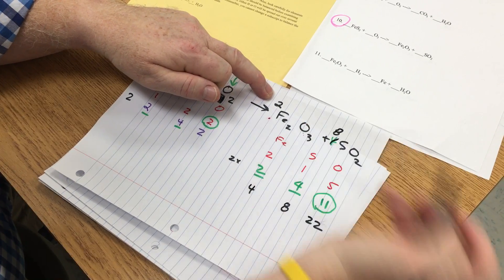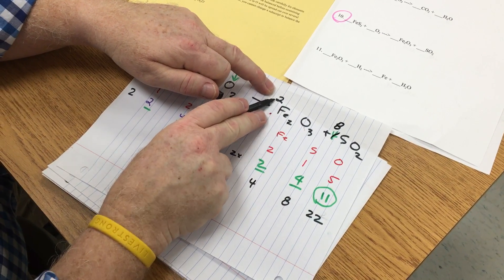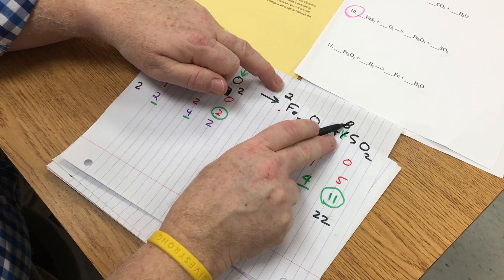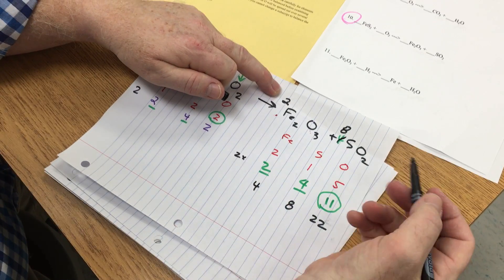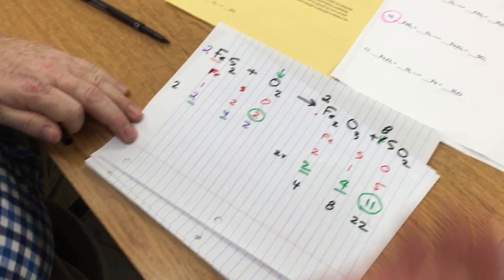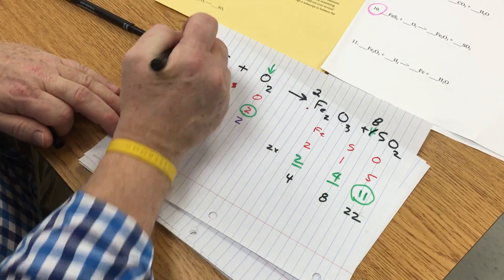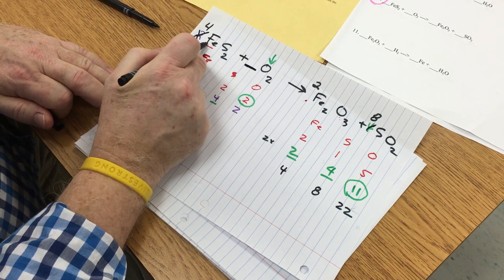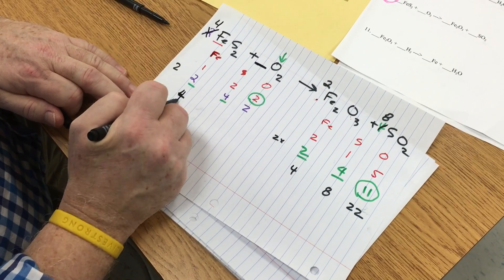So let's just count. Two times two is four, two times three is six, eight times two is sixteen, sixteen and six is twenty-two. And I have eight sulfurs. I've got to do the same thing on the other side. I change that two to a four, and now I've got four irons, eight sulfurs, they balance.